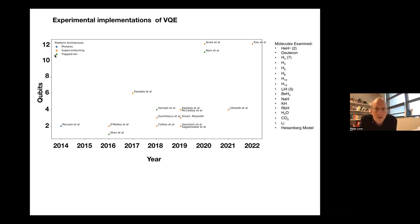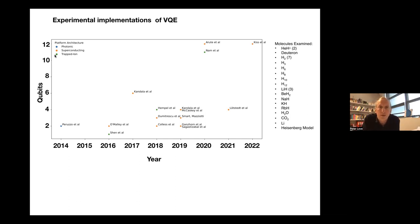It's worth bearing in mind that every point on the plot is an experiment, so there's a vast amount of energy, effort, money, and time that's been expended. The typical target problems for the VQE algorithm are small examples of the electronic structure problem — calculating the electronic energy of molecules in usually minimal or very small basis sets. This is just a list of the systems experimentally implemented. You'll notice that one of them is not a molecule: deuteron is not a molecule — that's the Oak Ridge effort by Dmitrescu et al., where they looked at a small nuclear physics problem.